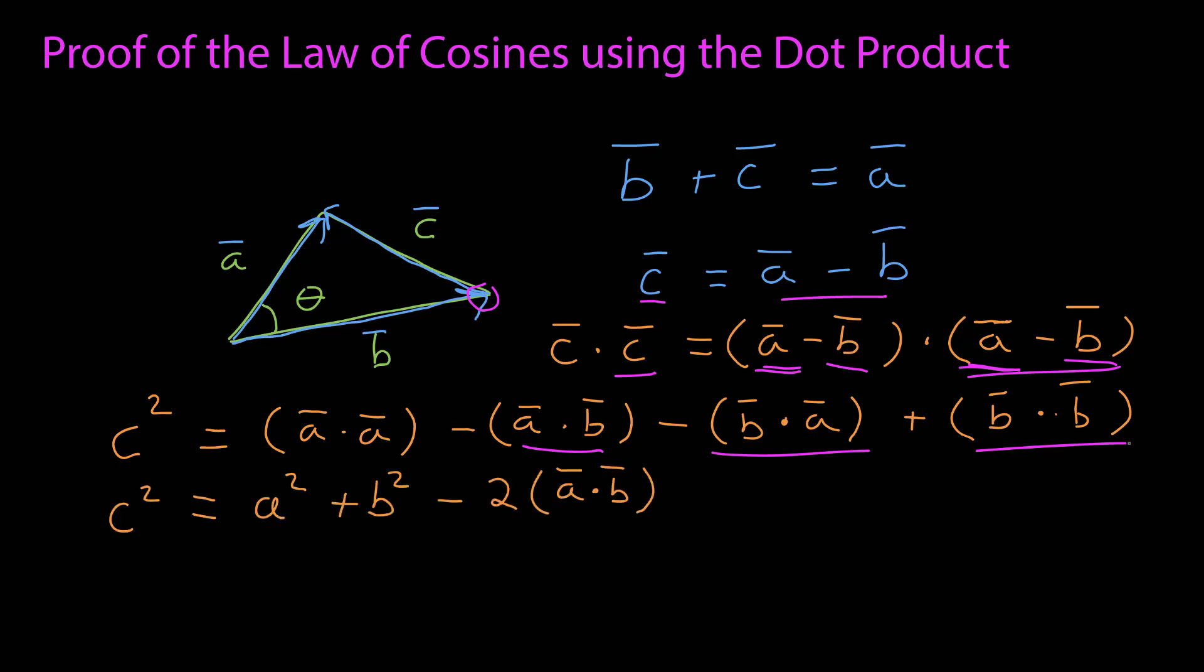That gives me now a squared and b squared for the first and last terms. And since the dot product is commutative, a dot b is equal to b dot a, so I have minus two a dot b.